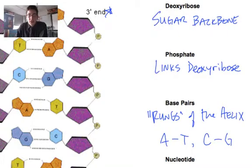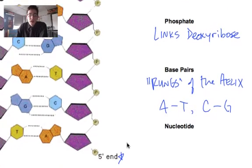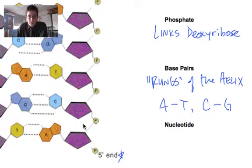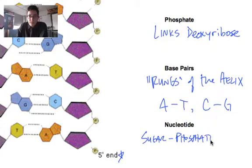And then the last piece of this is the nucleotide. A nucleotide represents an entire combination of a deoxyribose, a phosphate, and a base pair. So this would be the sugar-phosphate-base combination.